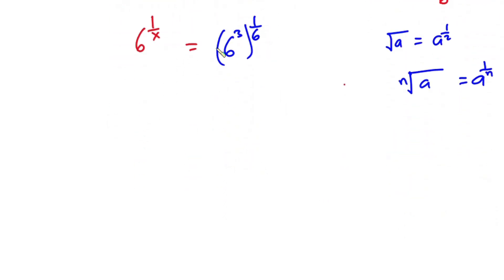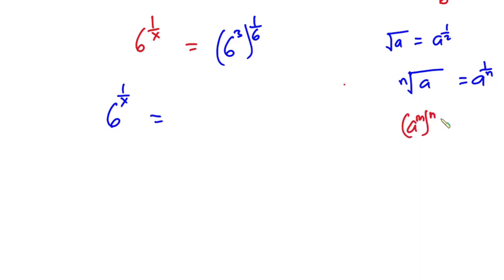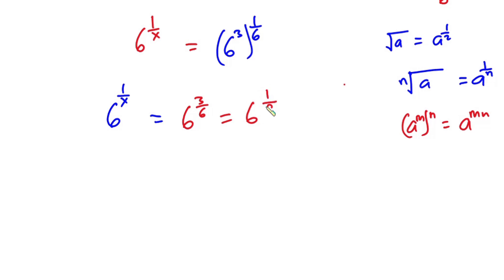Now let's go ahead and simplify this. We have 6 to the power 1 over x is equal to — now if I have a to the power m, to the power n, this is the same as a to the power m times n. So I can write this as 6 to the power 3 over 6, and this is the same as 6 to the power 1 over 2.